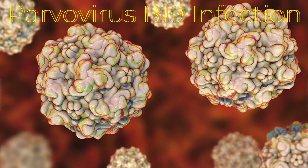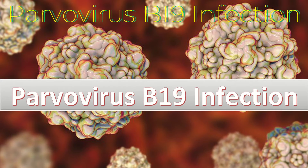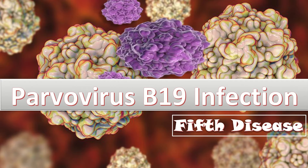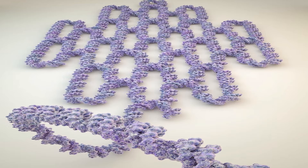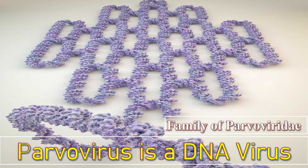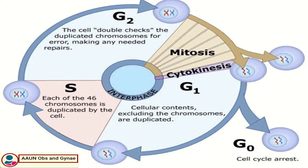This video is about Parvovirus B19 infection. Fifth disease is a mild illness caused by Parvovirus B19. Parvovirus is a DNA virus with a single-stranded DNA genome. It is a member of the family Parvoviridae, which are the smallest and simplest DNA viruses. Parvovirus replicates spontaneously only in dividing cells in the S phase of mitosis.